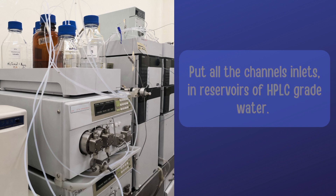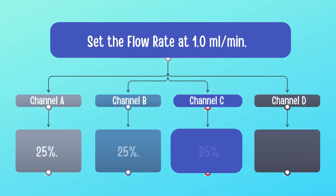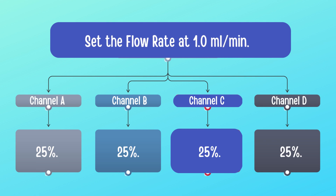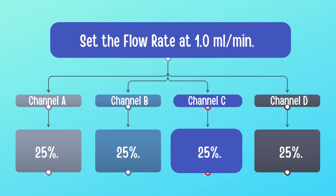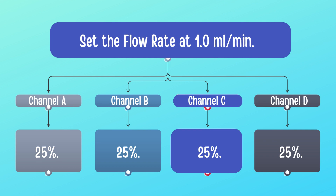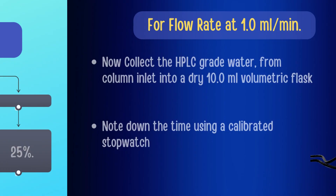After that, set the flow rate at 1.0 ml per minute, keeping 25% composition for each channel — channel A 25%, B 25%, C 25%, and D 25%. Allow the system to stabilize for a few minutes.